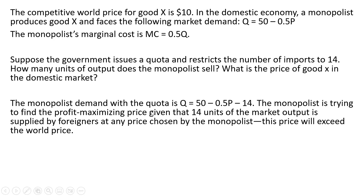The monopolist demand with the quota is as follows. We're going to take the demand put up top here and subtract 14 units from it. The monopolist is trying to find the profit-maximizing price given that 14 units of the market output is supplied by foreigners at any price chosen by the monopolist. This price will exceed the world price of $10.